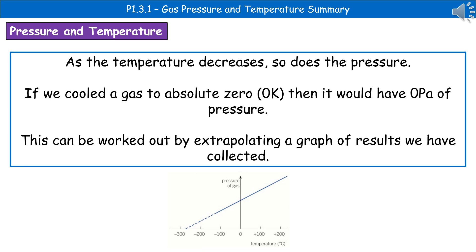If we consider what we'd see if we kept cooling that gas down to what's called absolute zero, which is zero degrees Kelvin, we'd actually have a pressure of zero pascals. That's something we can't generate in the lab, but we can work it out by extrapolating a graph of results we have collected in our lab.